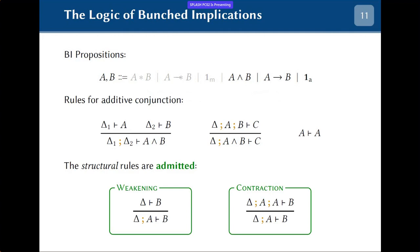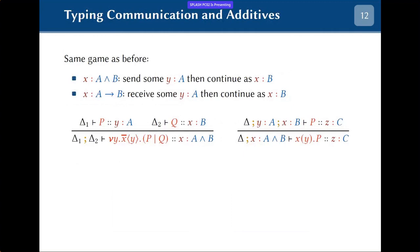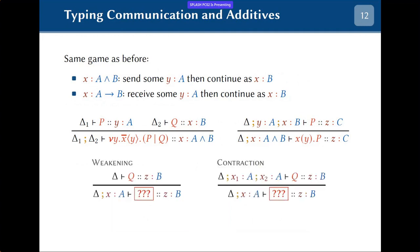If we just look at the additive fragment, we can play the same game of constructing a typing. The conjunction is still going to be a send and the implication still a receive, and the two typing rules are exactly the same but with additive constructs. The complication is that we also need to support weakening and contraction, and the question is: what is the process interpretation of these two rules? This is one of the biggest innovations of this work.